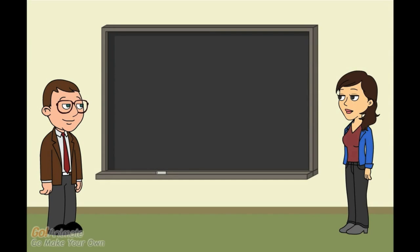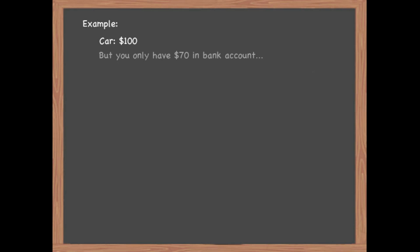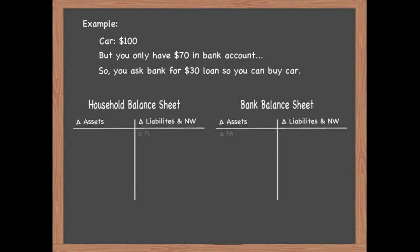Yes. Let's look at an example. Say that you are a household and I'm a bank. You want to buy a car that costs $100, but you only have $70 in your bank account. You go to the bank and ask for a $30 loan so you can buy the car. The car loan is your financial liability. However, notice that it is the bank's financial asset. Conversely, the bank's financial liability is the money in your bank account, which is a financial asset for you. So now I can buy the car, which will decrease my financial assets by $100 but increase my real assets by the value of the car, $100.